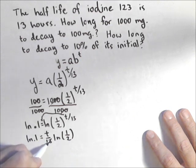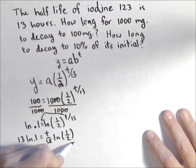I'm gonna multiply both sides by 13, so that cancels it out over there and puts it over here. And divide both sides by ln of 1 half.